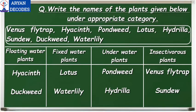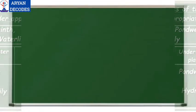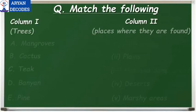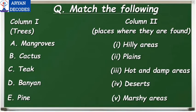Let's move on to the next worksheet: match the following. Match the different types of trees with the places where they are found. First, mangroves — marshy areas. Second, cactus — deserts. Third, teak — hot and damp areas. Fourth, banyan trees — plains. And last, pine trees — hilly areas.